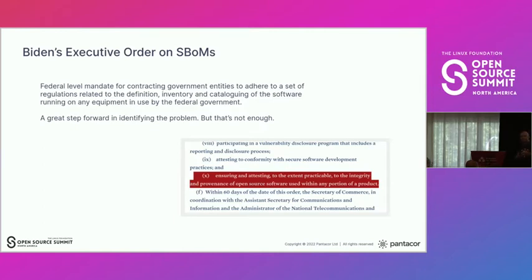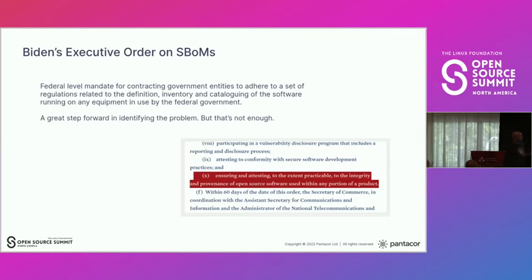One of the key points is the provenance of open-source software used within any portion of a product. That's usually the hardest part — because if you have a product that's 100% proprietary software, you're kind of in control. You know what's coming from where. But we're talking about open-source software, which is now pervasive to every part of everything in our lives. It starts to become important to understand what issues it can bring.